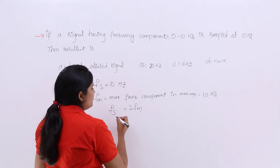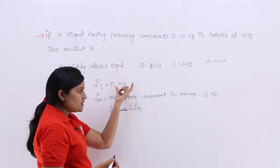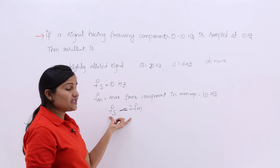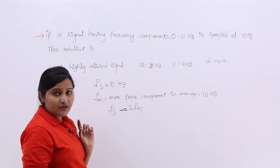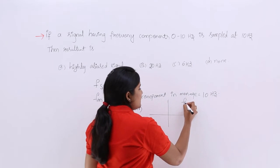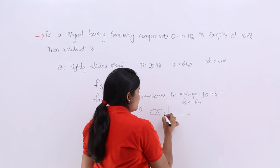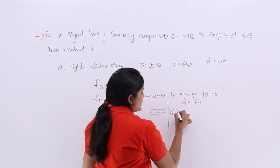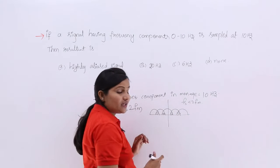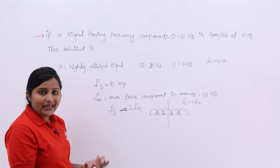If you consider 2FM, this FS is less than 2FM. These two values of FS and FM satisfy the condition FS less than 2FM — the undersampling condition. In case of FS less than 2FM, the spectrum of the sampled signal will show aliasing effect. The resultant signal is a highly distorted or highly aliased signal.